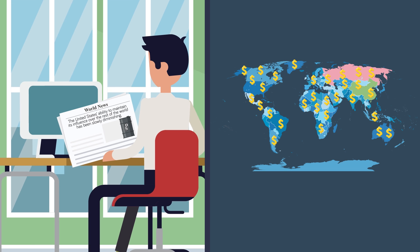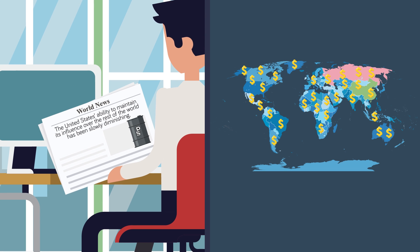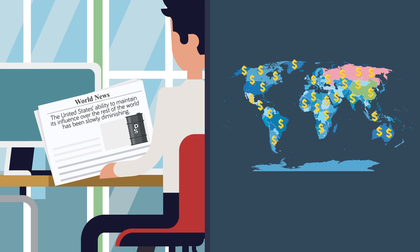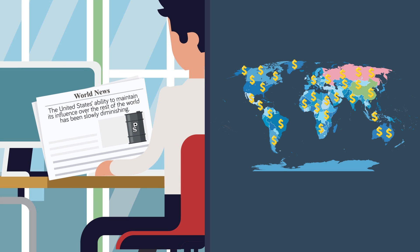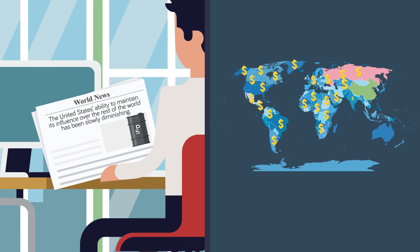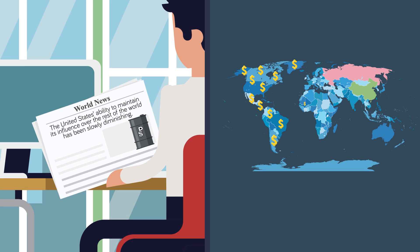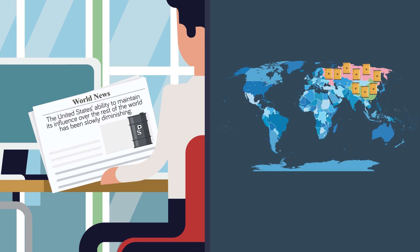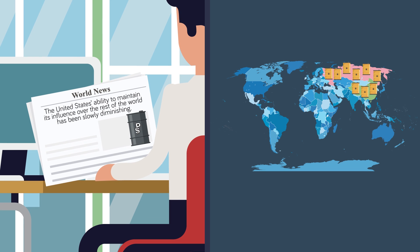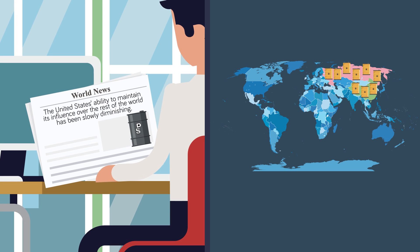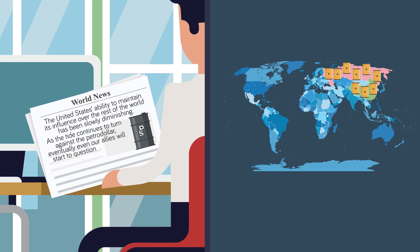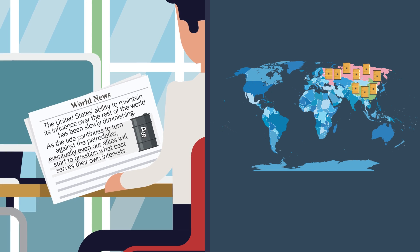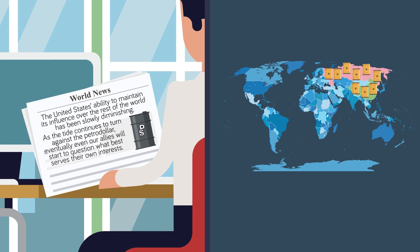Reuters isn't alone. Another journalist wrote: "The United States' ability to maintain its influence over the rest of the world has been slowly diminishing. The USA's dollar monopoly might be coming to an end." One of the reasons is that mass consumers of oil — China as well as Russia — have been setting up deals with oil-rich countries, and they are not doing these deals in the US dollar. As the tide continues to turn against the petrodollar, eventually even our allies will start to question what best serves their own interests.